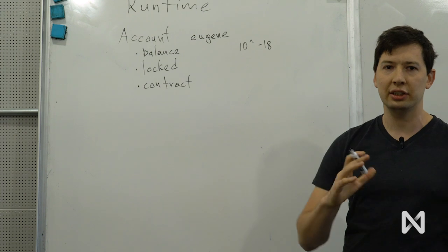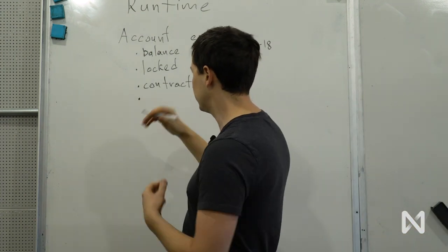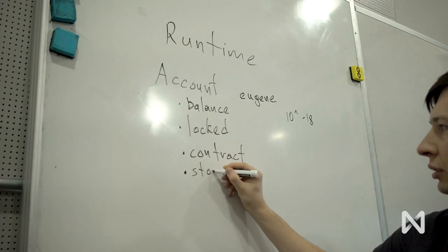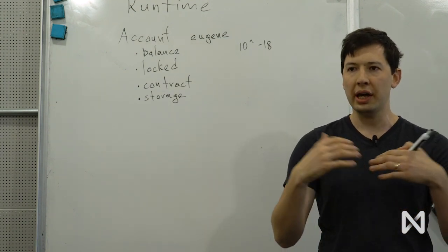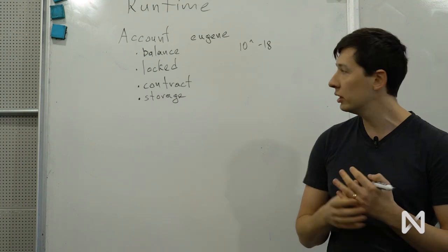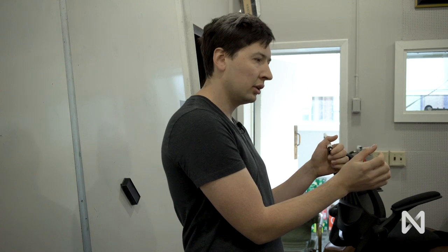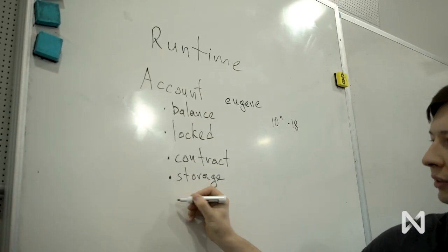So contract can have a state, and this state is a storage of the contract. So let's call it storage. And finally, to be able to access the account, we can have multiple access keys. On Ethereum or on a Bitcoin network, your public key and corresponding private key gives you access to the account. By using a private key, you sign a transaction that guarantees that you are the owner of the account, and you can act on behalf of this account. On NEAR, we have multiple access keys, and they can have different permissions.